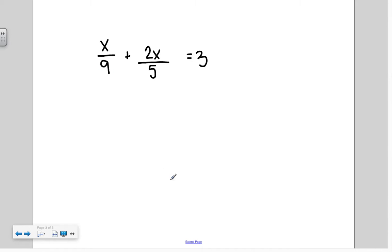Our next example, we have x over 9 plus 2x over 5 equals 3. So I'm going to do that same thing. I need to undo dividing by 9 and 5, multiplying by 9 and 5, making sure that I multiply everything by 9 and 5.